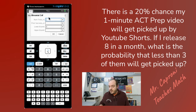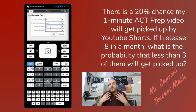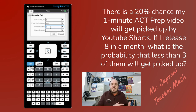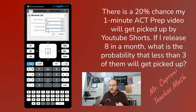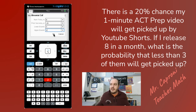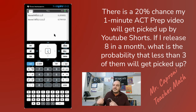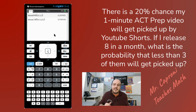In binomial CDF, it asks for the number of trials (eight), probability of success (0.20), and then a lower bound and upper bound — that's the range. Less than three means we go from zero to two; three itself is not included. The lower bound was already set to zero, so I leave that and set the upper bound to two. Clicking OK gives us 0.796918 — about a 79 to 80% chance that fewer than three of my eight videos get picked up by YouTube Shorts.